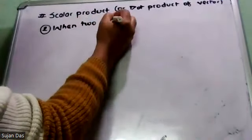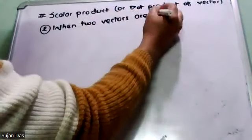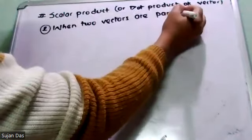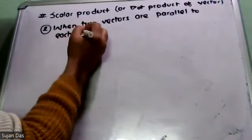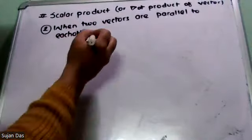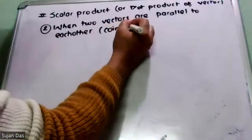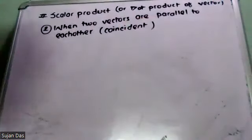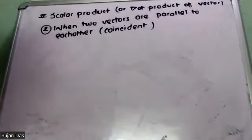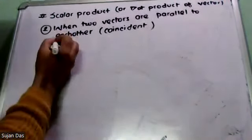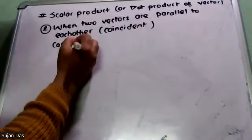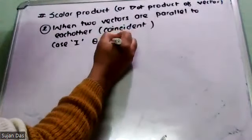When two vectors are parallel to each other, this is also called the coincident condition. When two vectors are parallel to each other — Case 1: theta equals 0 degrees.